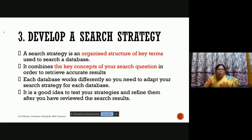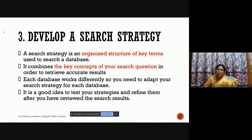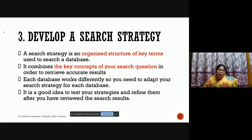Now we move to the search strategy. A search strategy is an organized structure of key terms used to search a database. We have already identified key terms while framing the question. How you use these key terms — in what order and structure — makes a lot of difference. The position and combination of words matters greatly in order to retrieve accurate results. Each database works differently, so you need to adapt your strategy accordingly.